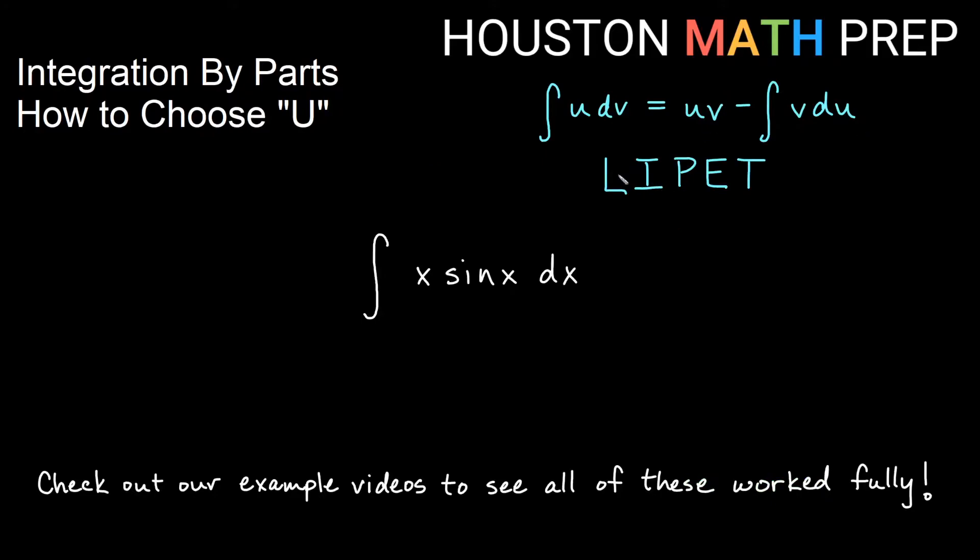If we look at a few of our examples here, LIPET. My first thing I have here is x in my product. My second thing that I have here is sine x. That's trig. So I notice that P comes before T. So this is what I will choose for U. So in this instance, my U is going to equal x. And my dv will be the sine x dx.